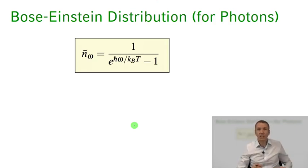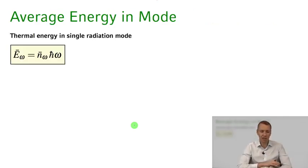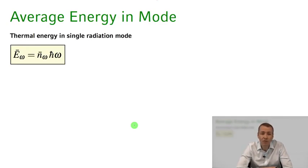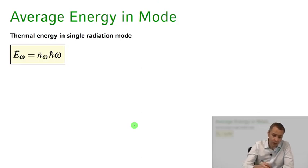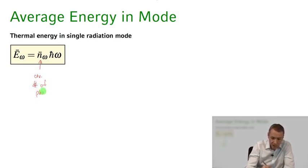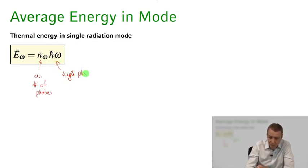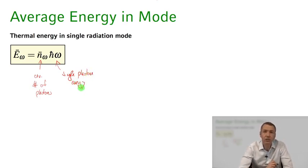Let's proceed toward Planck's blackbody radiation formula. The average energy stored in a single mode thermal field state is simply the average number of photons in that mode multiplied by the energy of a single photon, which is ℏω.